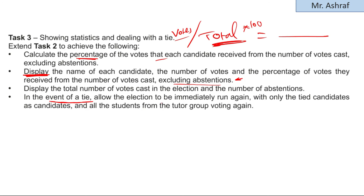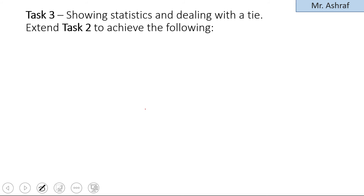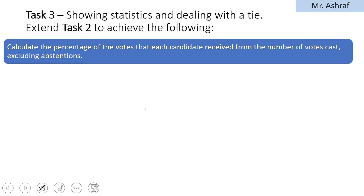If the student has not voted before, store their unique voter number in a suitable data structure — most likely an array — but do not store the vote itself separately. Then add their vote to the relevant candidate count or abstention count.